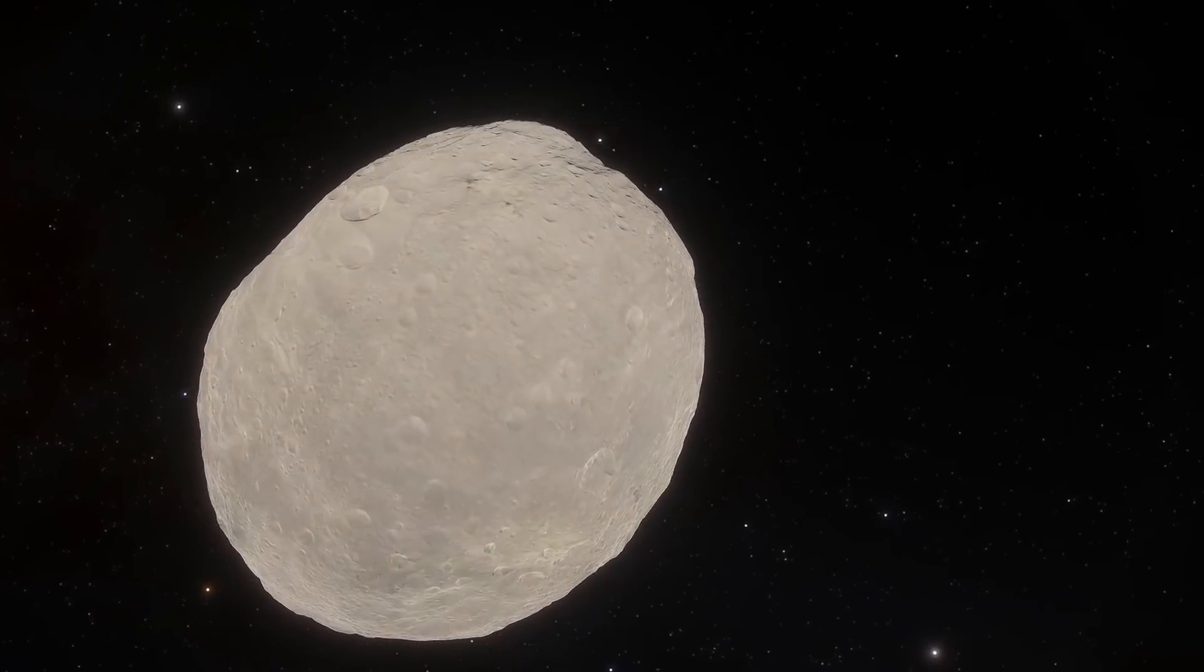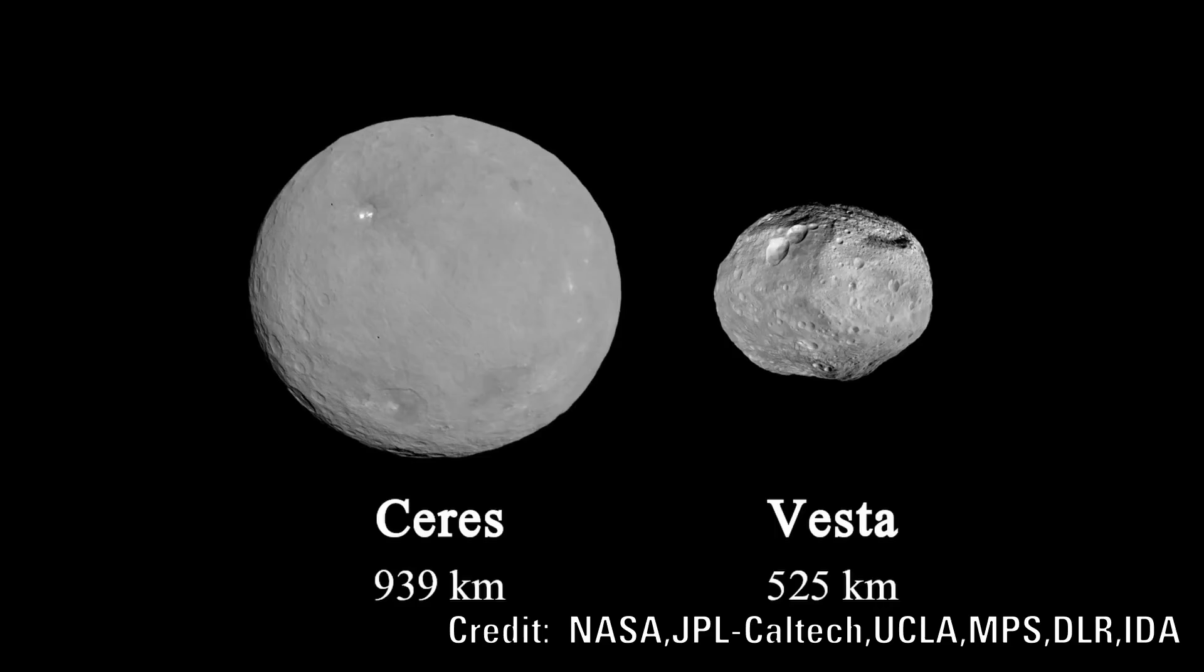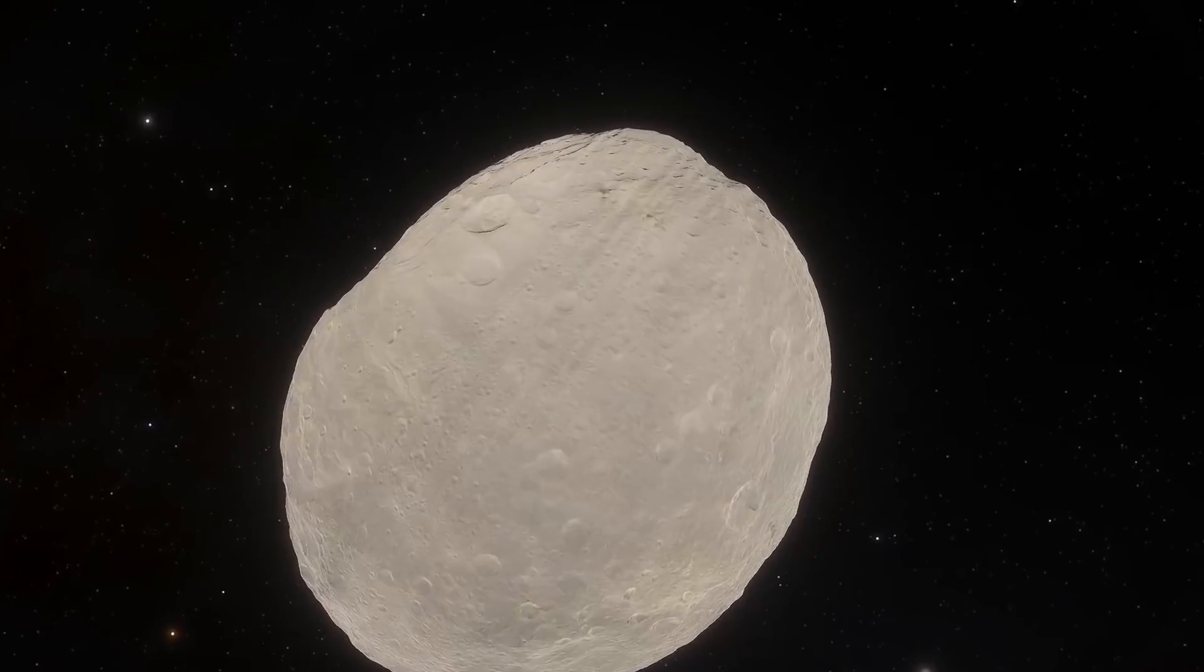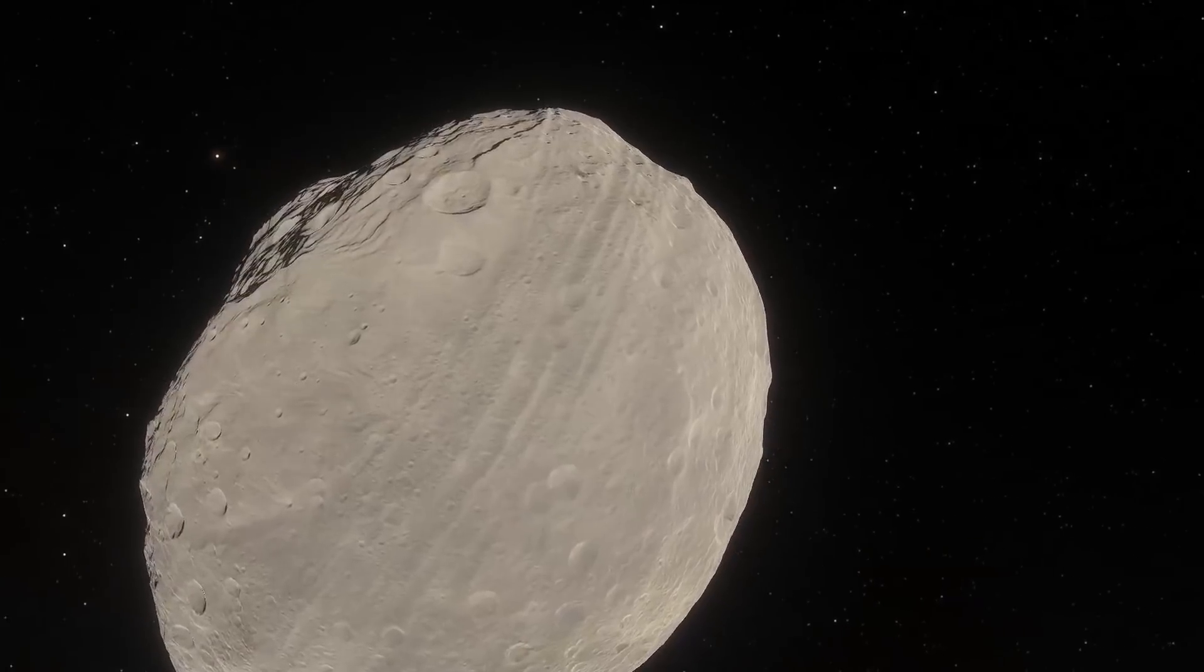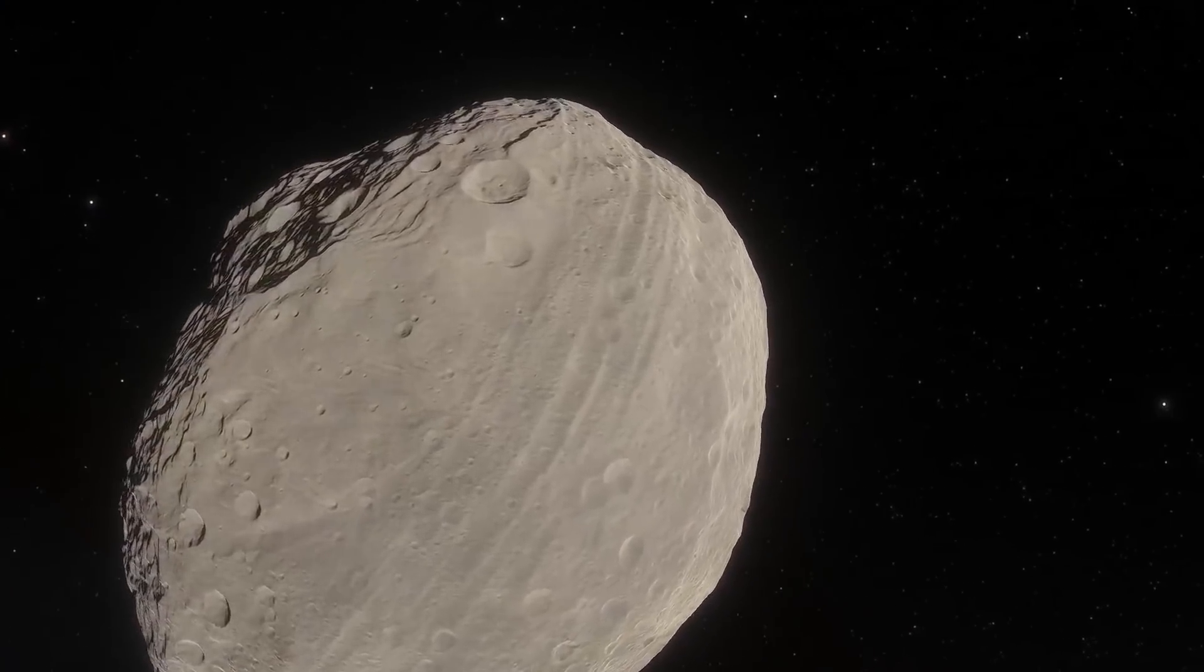Vesta is one of the largest objects in the asteroid belt, second only behind Ceres. It has a diameter of 326 miles. Its mass constitutes a staggering 9% of the mass of the asteroid belt. It is also the brightest asteroid that is visible from Earth. It was first discovered back in 1802 by Heinrich Albers.